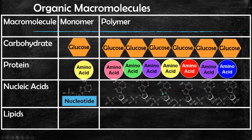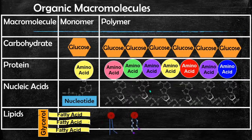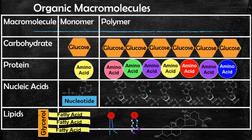Lipids are the macromolecules that are different from the rest. Lipids are not made in that monomer-polymer fashion. Instead, we have three different structures: triglycerides that are made out of fatty acids and glycerol, phospholipids that make up our cell membranes, and steroid hormones like estrogen and testosterone that are also lipid-based.